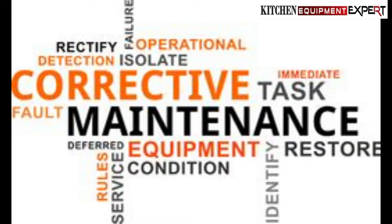Corrective or breakdown maintenance refers to repair after equipment is out of order. It can be defined as the maintenance required when an item has failed or worn out, to bring it back to working order. It is concerned with eliminating production bottlenecks by timely repairs or replacement of worn-out parts. Repair maintenance may call for disassembly of equipment, detection of malfunctioning, repair or replacement of broken parts, and then a check to ensure the machinery functions efficiently.